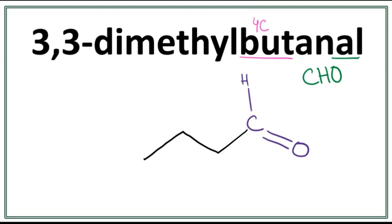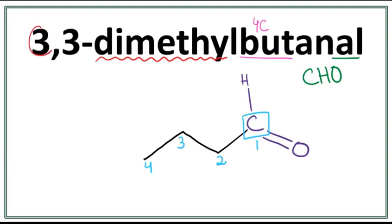Let's number these carbons. The carbon in the functional group is always the first carbon. Second carbon, third carbon, and the fourth carbon. Now this 'dimethyl' here means that there are two methyl groups attached to this aldehyde, both of them on the third carbon, right here.